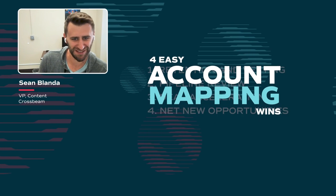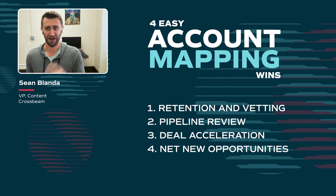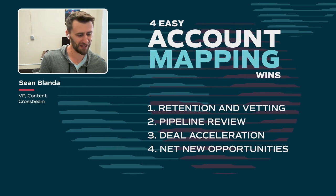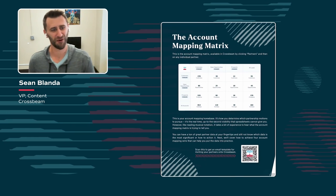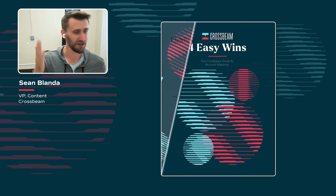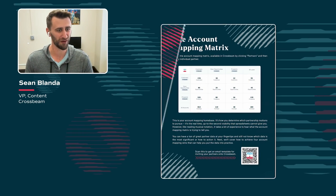That is the fourth easy win. To recap, the four easy wins are: Retention and Vetting (customer-customer overlap), Pipeline Review (opportunity-opportunity), Deal Acceleration, and Net New Opportunities. All of these are detailed in our new e-book, Four Easy Wins: The Crossbeam Guide to Account Mapping — including all the fields, tips, workflows, and advice for executing these four wins. With that, live Chris and I are going to come and answer all your questions, as well as discuss what's working for you or any other advice for running these wins. We'll see you on the other side. Thank you all.